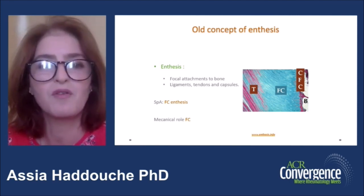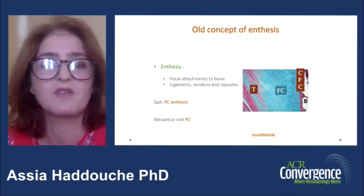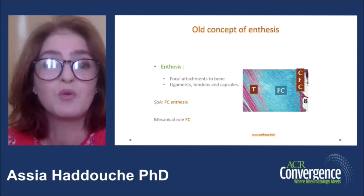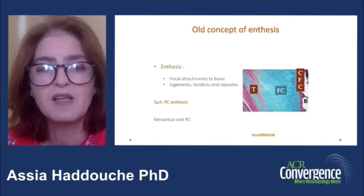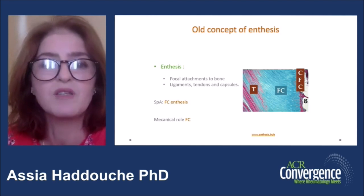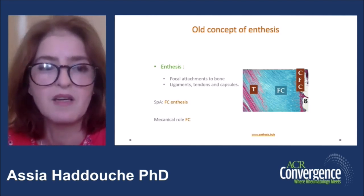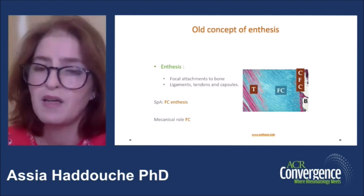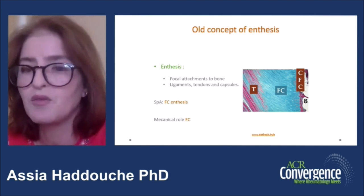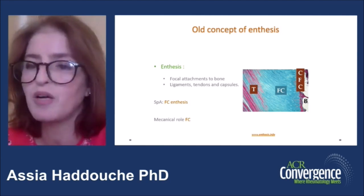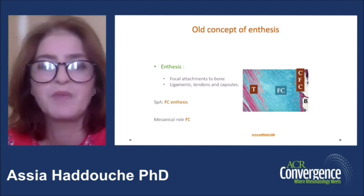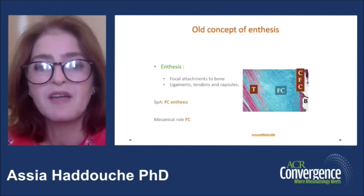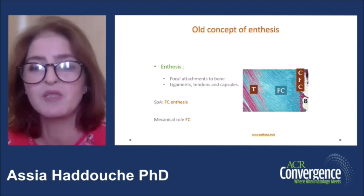The old concept of enthesis defined it as the focal attachment to bone of ligament, tendon, and capsules. Fibrocartilaginous entheses are those involved in spondyloarthritis. It is composed of four successive strata: tendon, then fibrocartilage, then calcified fibrocartilage, and then bone. The fibrocartilage plays a key role in the protection of the tendon during motion.